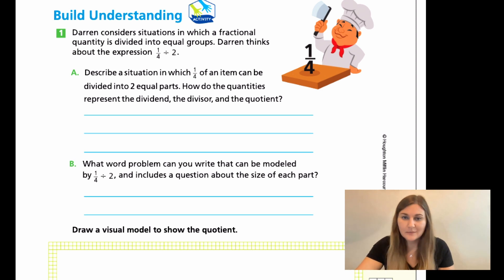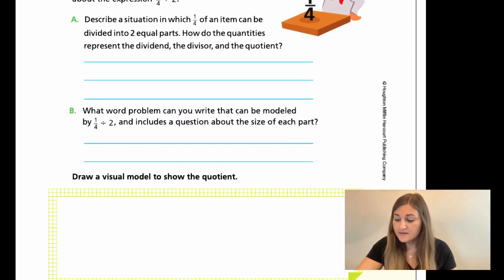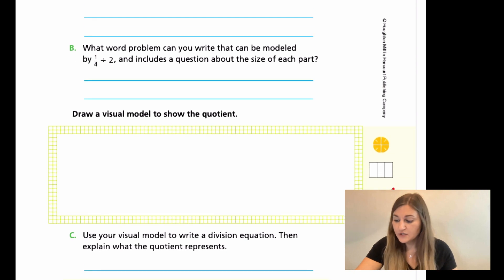So no matter what you come up with, it's probably going to be something about food because that's what we've been talking about. We have a little chef, we're talking about Darren in a cooking class. No matter what you decide to come up with is great. You just want to make sure that the dividend, the divisor, and the quotient are all relating to the correct quantities. Then for B, it says what word problem can you write that can be modeled by 1/4 divided by 2 and includes a question about the size of each part? This is where you can really write out your very quick word problem here. And then underneath it, just draw a visual model. Again, you can do this with rectangles or circles. Either one is perfectly acceptable. And then C, use your visual model to write a division equation and explain what the quotient represents.